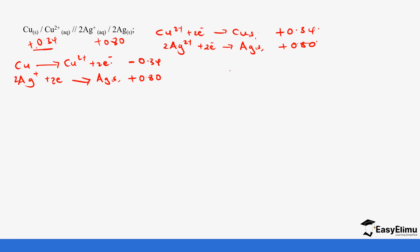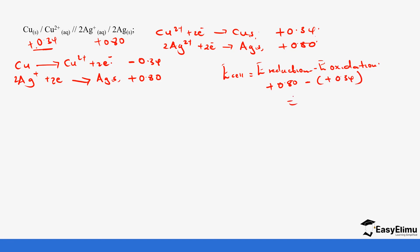Using the formula: E_cell equals E_reduction minus E_oxidation. E_reduction is the compound with the highest tendency to gain electrons — the most positive value. Looking at copper and silver, silver is more positive at 0.80. So it becomes positive 0.80 minus E_oxidation, which is copper at positive 0.34, giving us positive 0.46 volts. This tells us this reaction will occur. Using the other method — adding the two half-equations — also gives positive 0.46 volts.